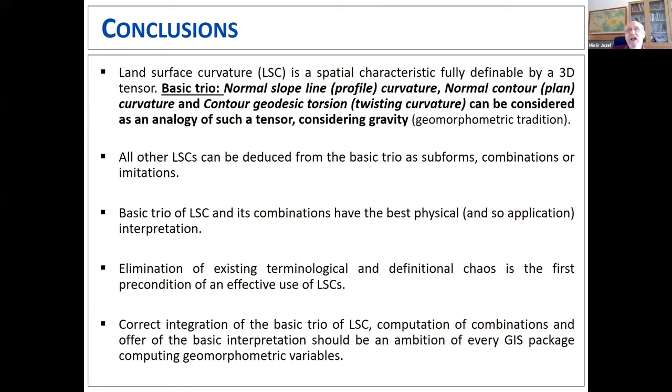Some conclusions. Land surface curvature in principle is spatial characteristic that is fully definable by a 3D tensor. From our point of view of our geomorphometric tradition, this 3D tensor can be represented as normal curvatures plus geodesic torsion, from which we can deduce all other used curvatures. That means all information is included in this 3D. And for the future, our suggestion is to include this basic trio in GIS technology, include the tools that enable us to compute combinations of these that will lead to more exact application of land surface curvature in geomorphometry and geosciences.